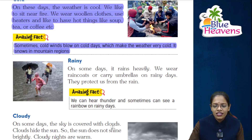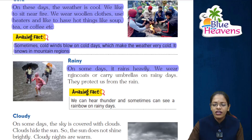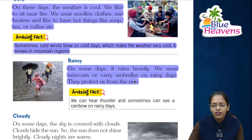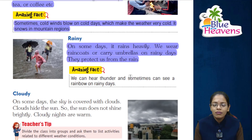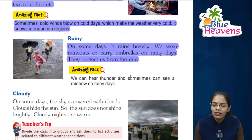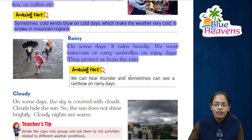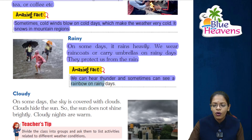Next season is rainy. On some days it rains heavily. We wear raincoats or carry umbrellas on rainy days — they protect us from the rain. Amazing fact: We can hear thunder and sometimes can see a rainbow on rainy days.